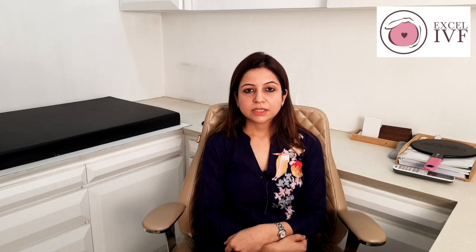This is how the IVF calendar works. A cycle would roughly last for a month, and we get to know about the pregnancy results right at the end of the cycle by doing a simple beta-HCG blood test or a urine pregnancy test.